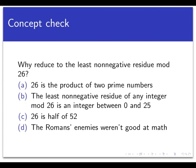So for a concept check, what is that? What does happen and why should we reduce all these numbers mod 26? Is it because 26 is the product of two prime numbers? Is it because the least non-negative residue mod 26 of any integer is another integer between 0 and 25? Is it because 26 is half of 52? Or is it because the people the Romans were fighting didn't really know any math? The answer here is going to be B. A and C are definitely true, but sort of irrelevant.